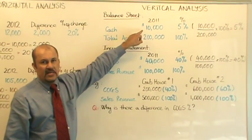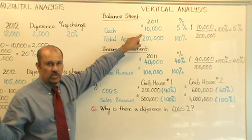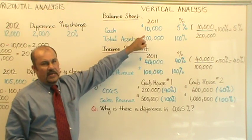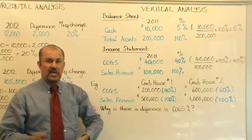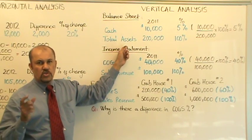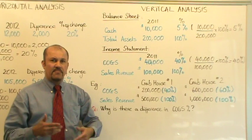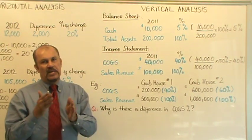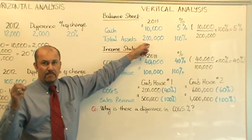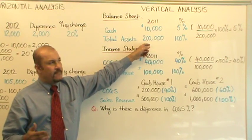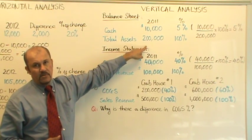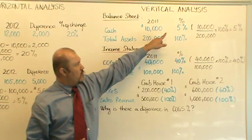We are only looking at one year at a time, unlike your horizontal analysis where you were going across two years. Cash in 2011 was $10,000. For the vertical analysis, you have to select a base category. Your base category can be total assets if it's a balance sheet, or total liabilities and equity combined — because assets equals liabilities and equity. So we take the cash balance of $10,000 and express it as a percentage of total assets of $200,000, and that works out to 5%.